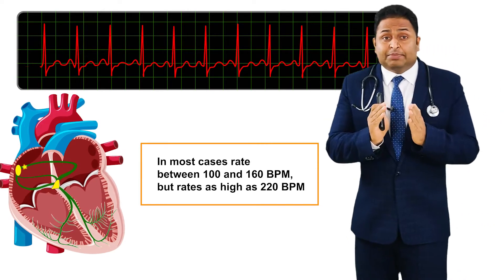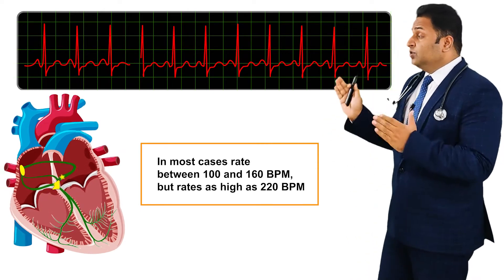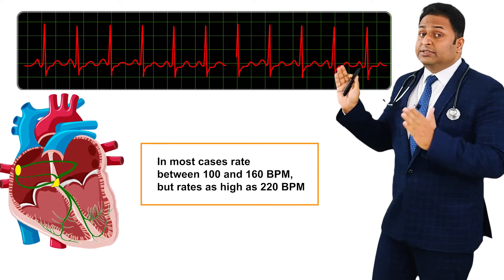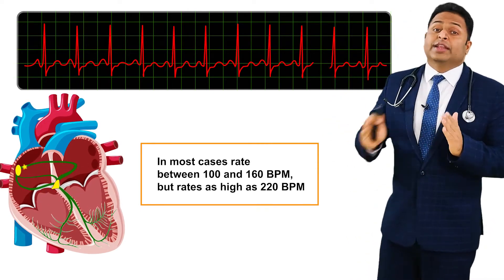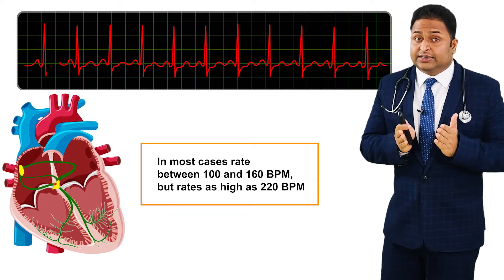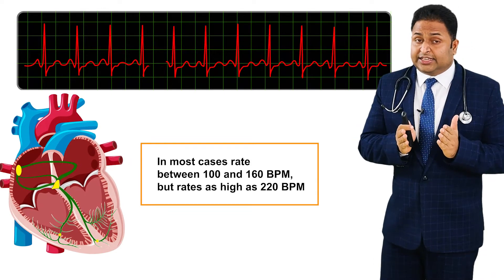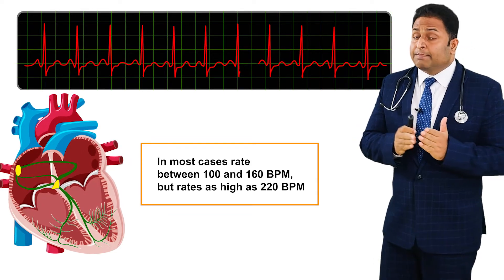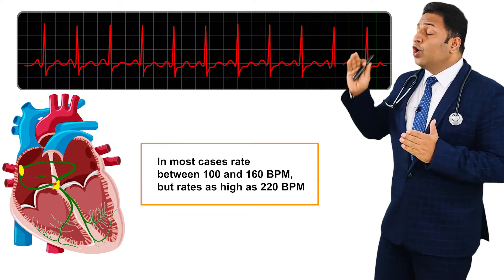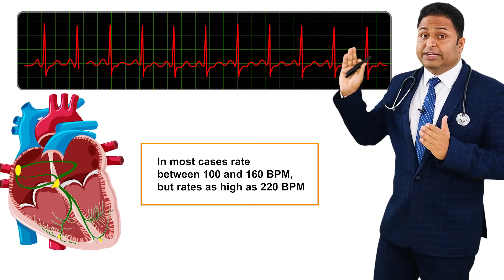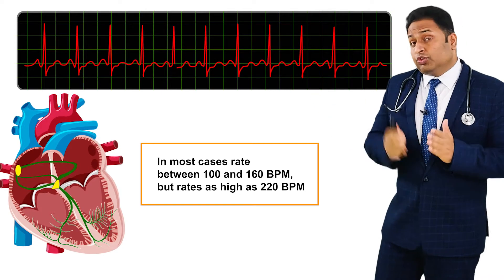So the rate between 100 to 160 beats per minute would be typical sinus tachycardia, but it may go up to 220 beats per minute.